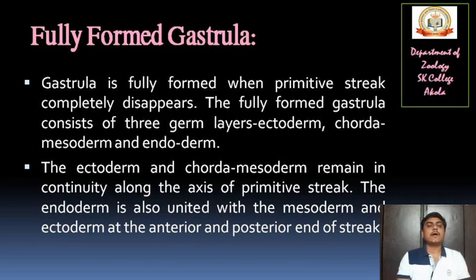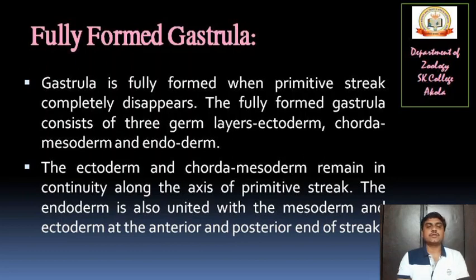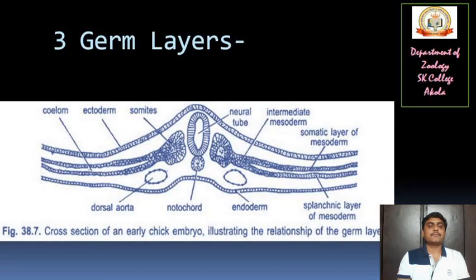Now we will see the fully formed gastrula. The gastrula is fully formed when the primitive streak completely disappears. After completion of the primitive streak, the fully formed gastrula consists of three germ layers: ectoderm, chordamesoderm, and endoderm, which will definitely convert into ectoderm, mesoderm, and endoderm, forming the different types of organs and body systems. The ectoderm and chordamesoderm remain in continuity along the axis of the primitive streak, and the endoderm is also united with the mesoderm and ectoderm at the anterior and posterior ends of the streak.